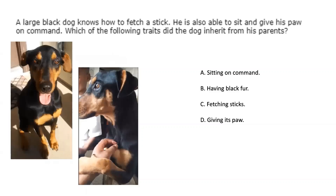A large black dog knows how to fetch a stick. He's also able to sit and give his paw on command. Which of the following traits did the dog inherit from his parents? A, sitting on command; B, having black fur; C, fetching sticks; or D, giving its paw? I'll give you just a moment and we'll be right back.